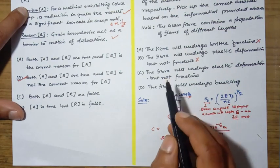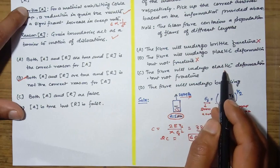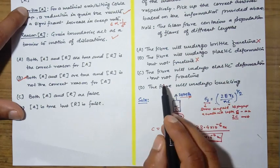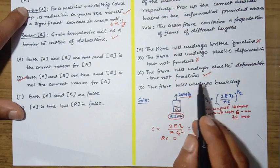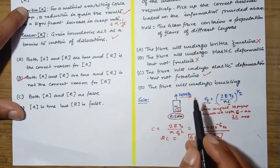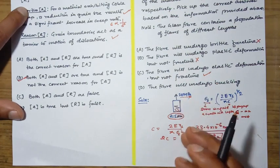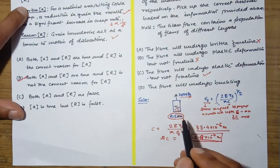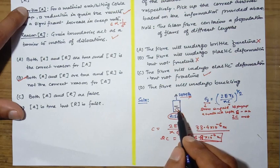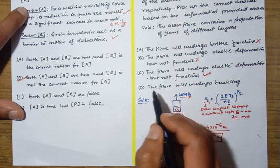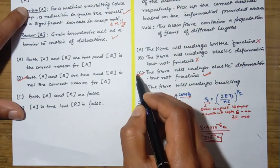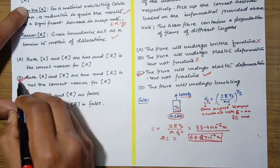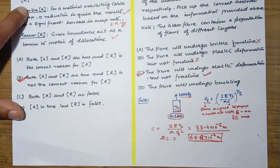The fiber will undergo elastic deformation but not fracture. This is the correct answer. This will undergo elastic deformation because this stress is not high enough to propagate a crack inside this, and that's why there will be only elastic deformation. So the correct answer will be C. This is the correct answer. Thank you.